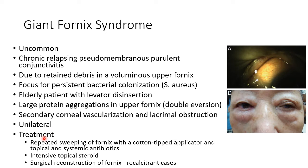The treatment of giant fornix syndrome includes repeated sweeping of the fornix with a cotton-tipped applicator, and topical and systemic antibiotics. We should also give intensive topical steroids. Surgical reconstruction of the fornix is indicated in recalcitrant cases.